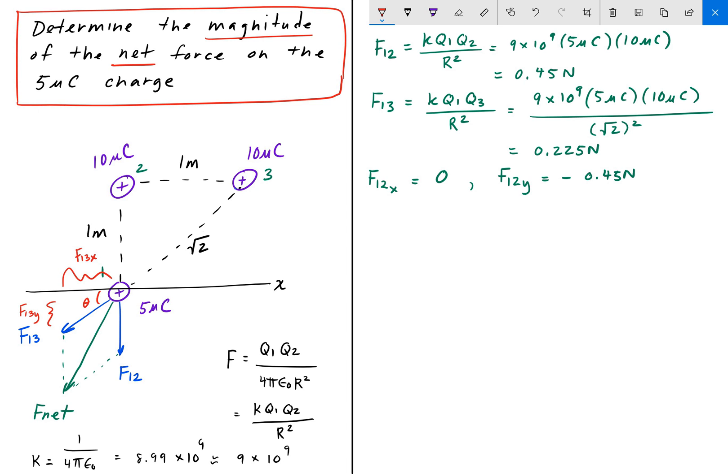So in order to find theta, we can do that using just basic geometry, using geometric relationships. That angle there is also equal to theta. And this is a 90-45-45 triangle, giving this angle here 45 degrees, and therefore theta is also 45 degrees. So I'll write that up top here, theta is 45 degrees.